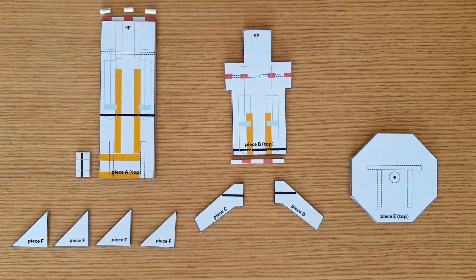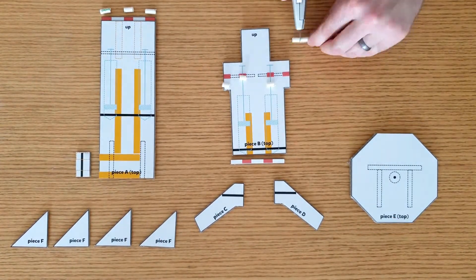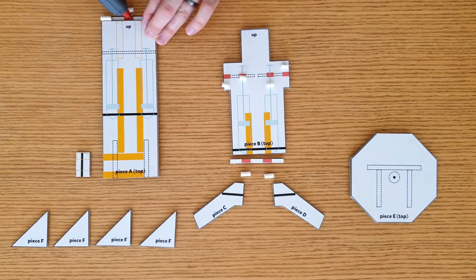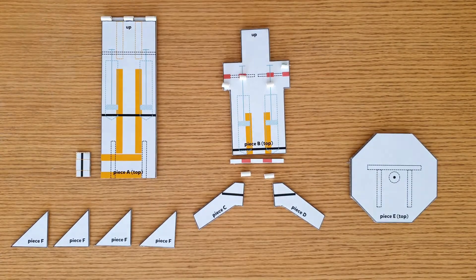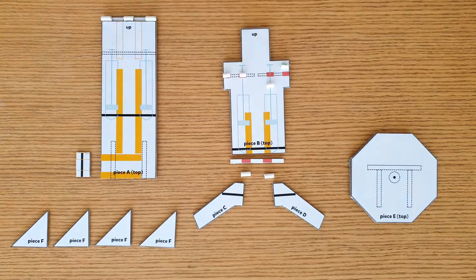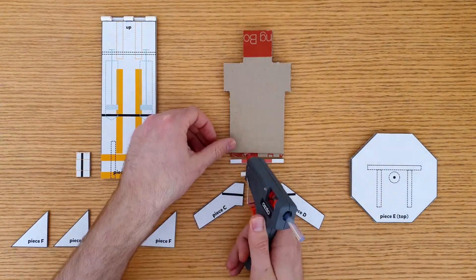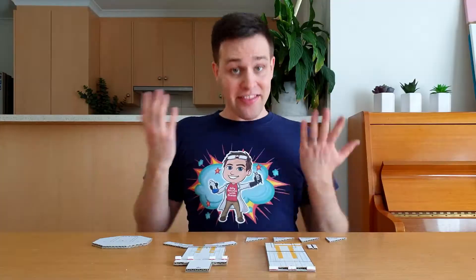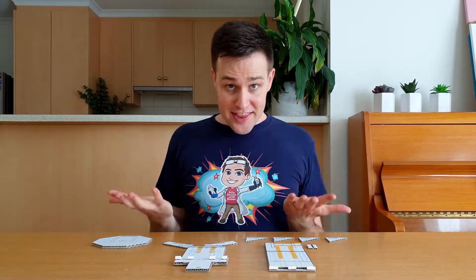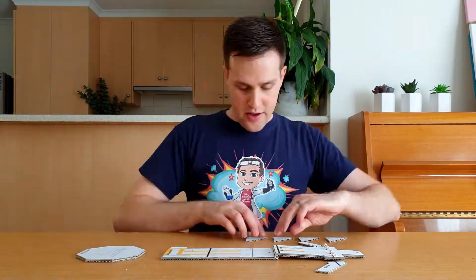Cut the paper straws and use a hot glue gun to attach them to the template. The red rectangles tell you how long the pieces of straw need to be and where they need to go. Don't forget to attach the straws to the bottom of piece B. At this point, arrange the pieces like this so you can start to see how it will fit together.